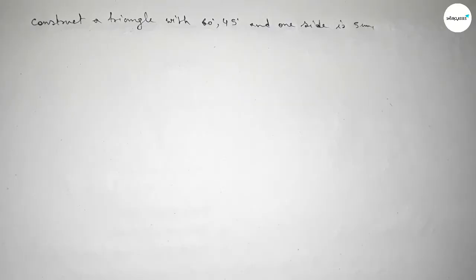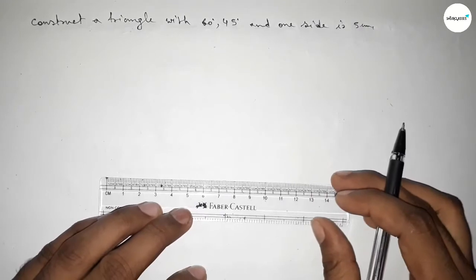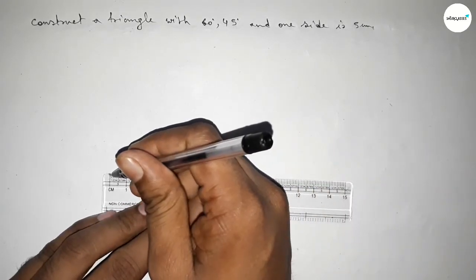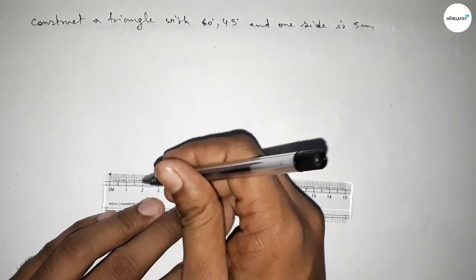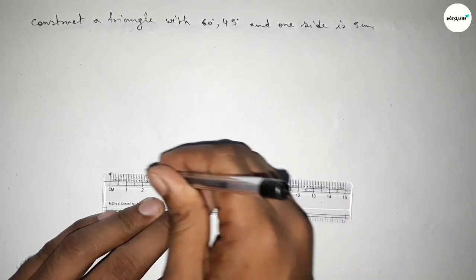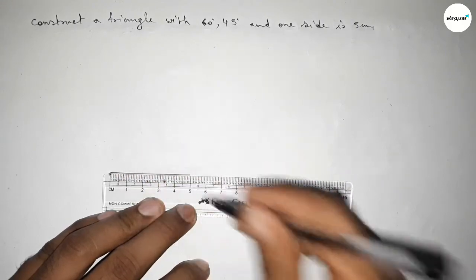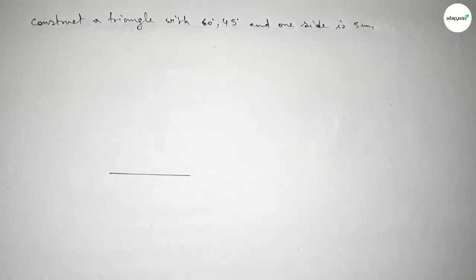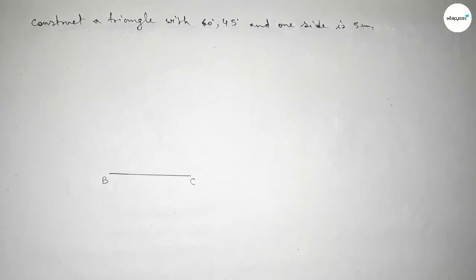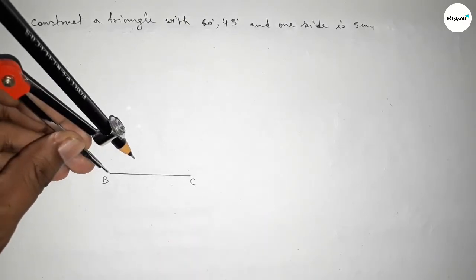First of all, we have to draw a line of length 5 centimeters. This is the 5 centimeter line, taking point B at one end and point C at the other. First, we have to draw a 60 degree angle on point B.